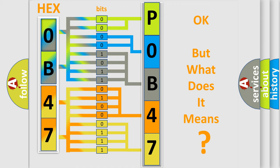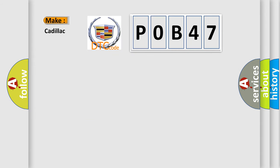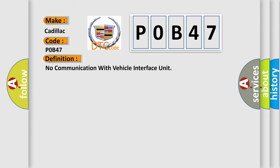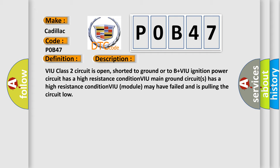We now know how the diagnostic tool translates received information into a more comprehensible format. The number itself does not make sense to us if we cannot assign information about what it actually expresses. So, what does the diagnostic trouble code POB47 interpret specifically for Cadillac car manufacturers? The basic definition is: No communication with vehicle interface unit. The VIU Class 2 circuit is open, shorted to ground or to B+. The VIU ignition power circuit has a high resistance condition. The VIU main ground circuit has a high resistance condition. The VIU module may have failed and is pulling the circuit low.